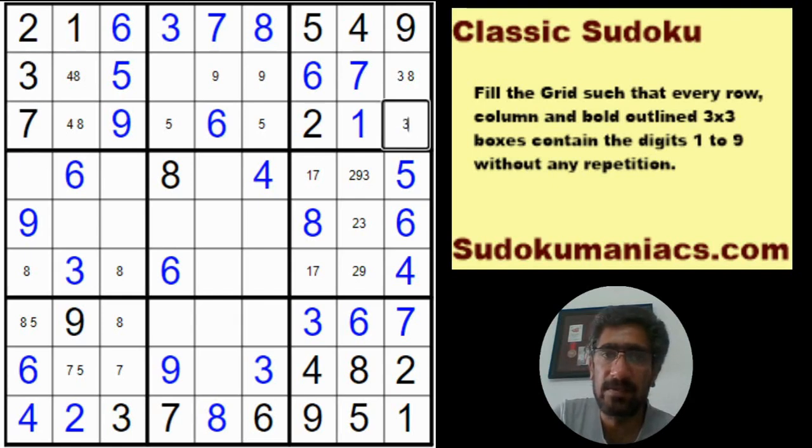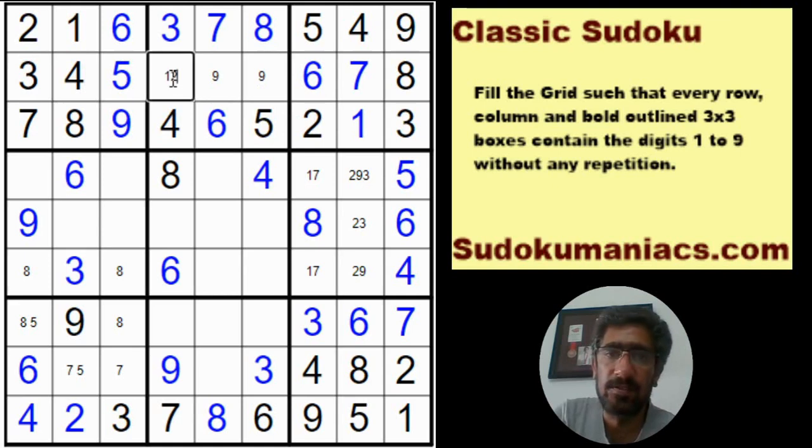So when I look at column 2, 8 cannot be here, it cannot be here, it has to be in these two. So this forms a pair of 4 and 8, leaving a 3 and a 7. With the 7 here, this is a 3, this is a 7.